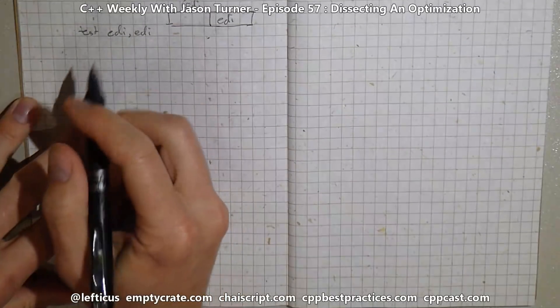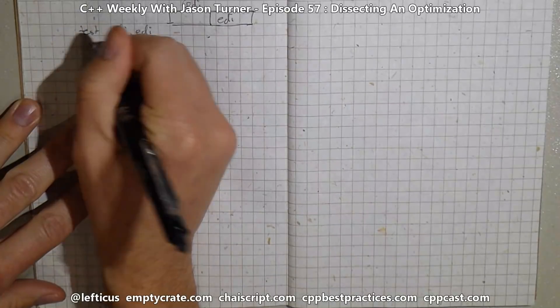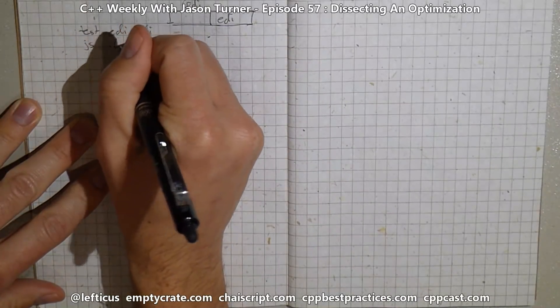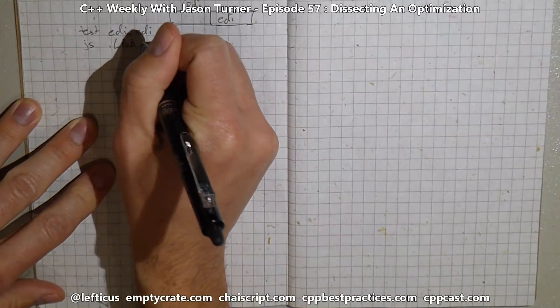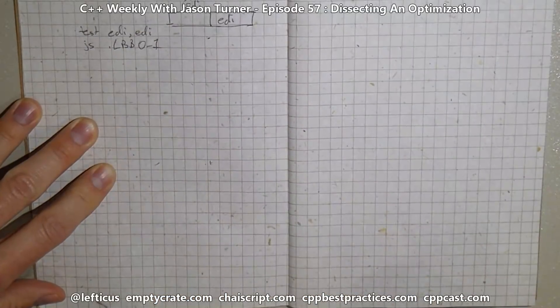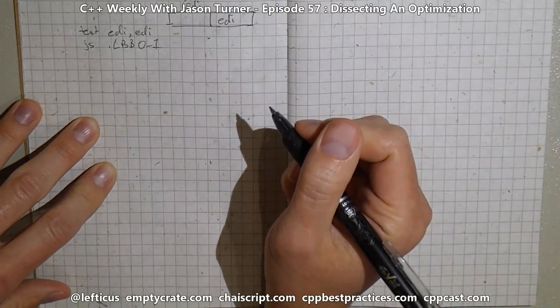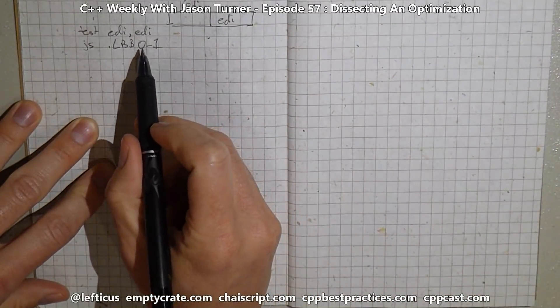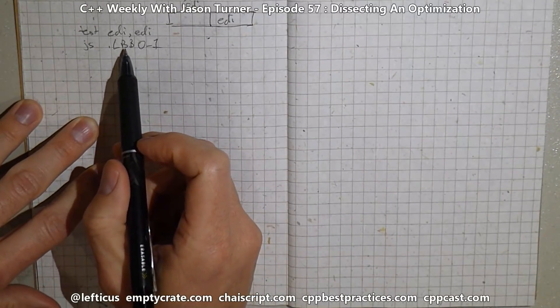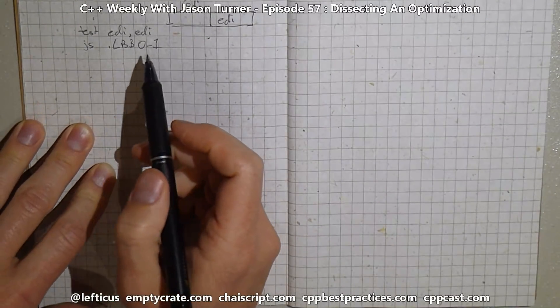If it is, then we're going to jump down to this label LBB zero underscore one. And this label is the exit from the function. So we're basically saying if it's zero, don't do any work at all, exit.